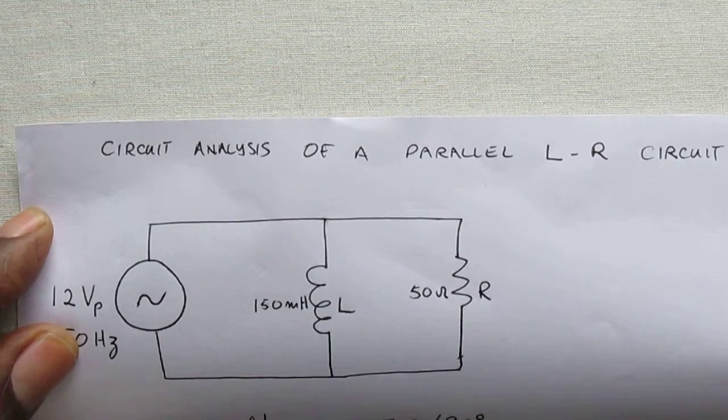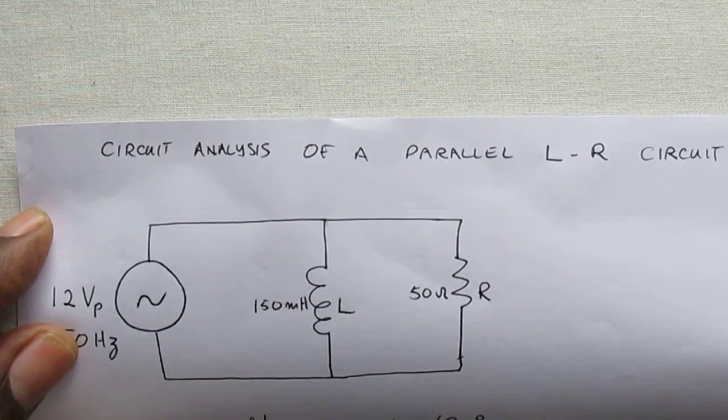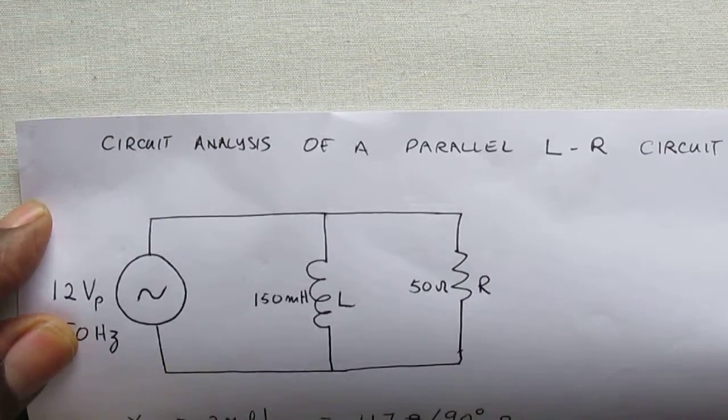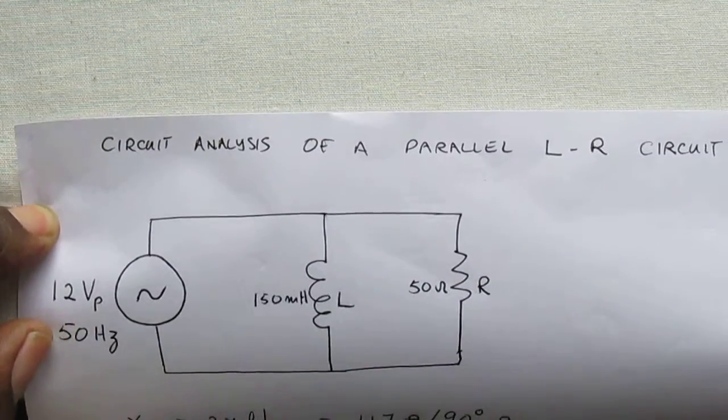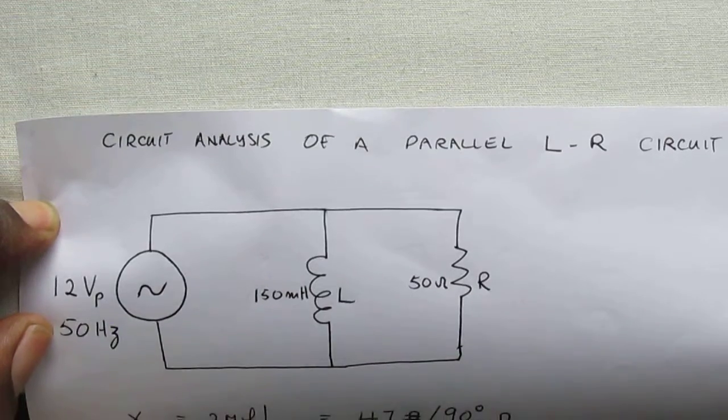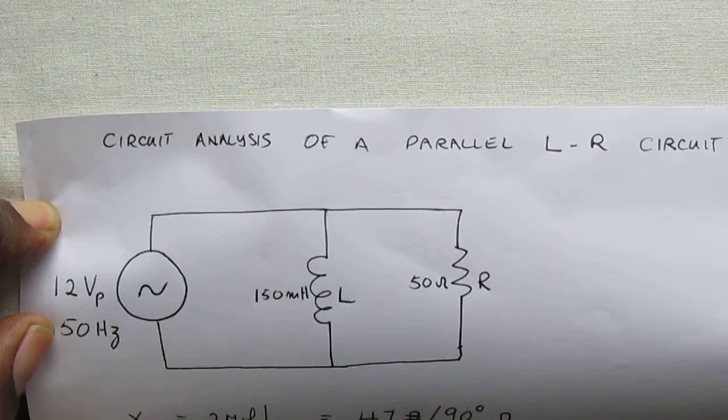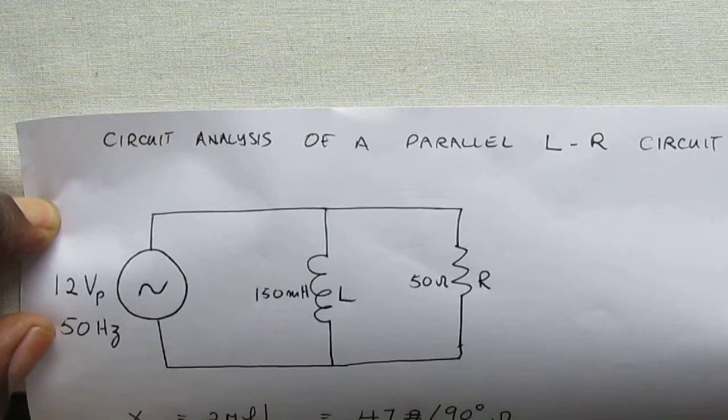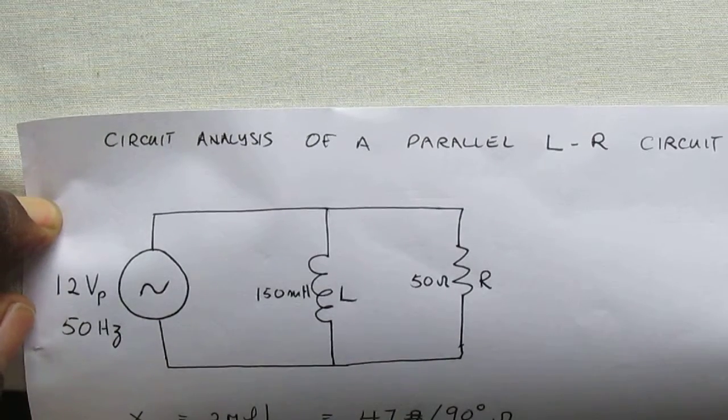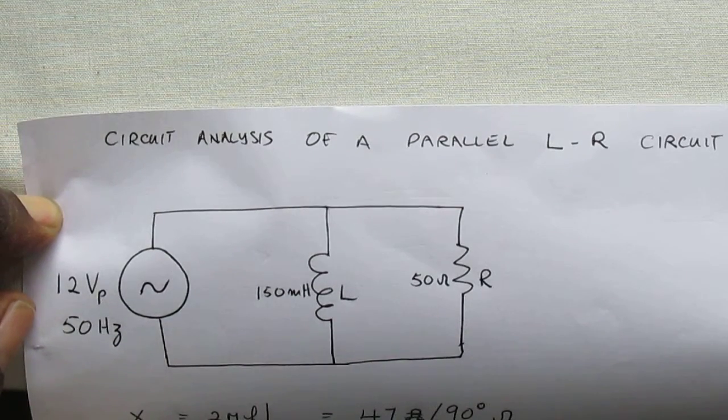Circuit analysis of a parallel LR circuit. Consider a parallel circuit made up of a 150 millihenry coil and a 50 ohm resistor supplied by 12 volt peak 50 Hertz signal.